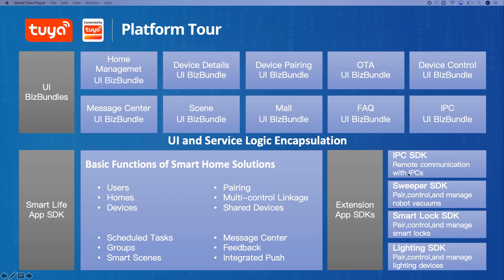Tuya also provides extension SDKs, namely the vertical category of SDKs, such as IPC SDK, Smart Lock SDK, and Swiper SDK, which rely on the Smart Life App SDK. They mainly encapsulate the unique functions of the vertical category to facilitate the rapid development of vertical category products. What's more, Tuya provides a development-free UI-based bundle SDK based on the Smart Home SDK, which can quickly access the Tuya Business module through simple calls. For specific effects, please refer to Tuya Smart App.